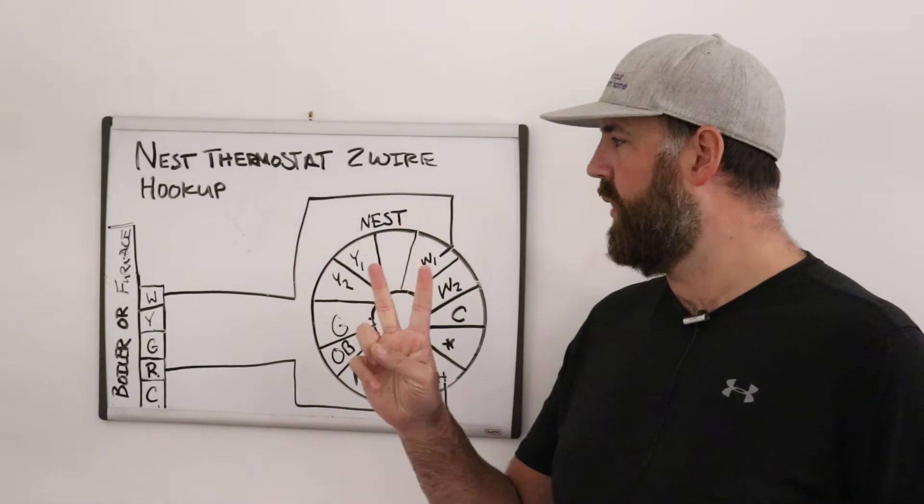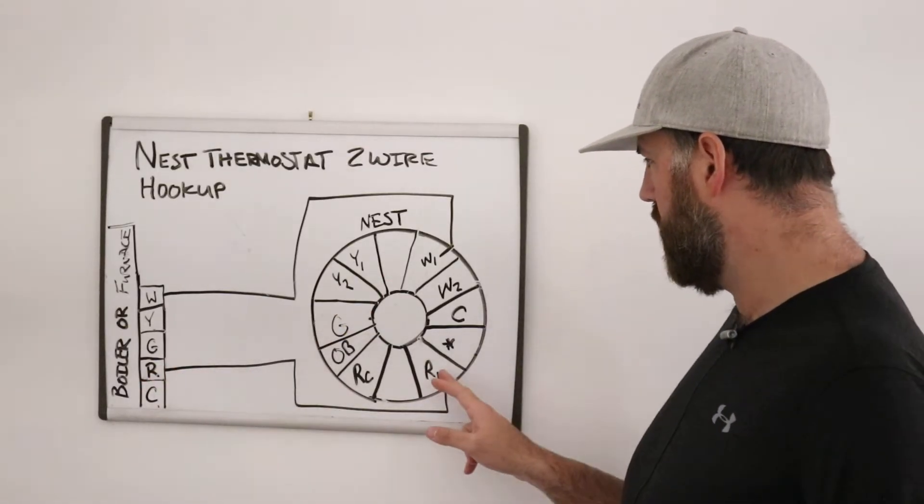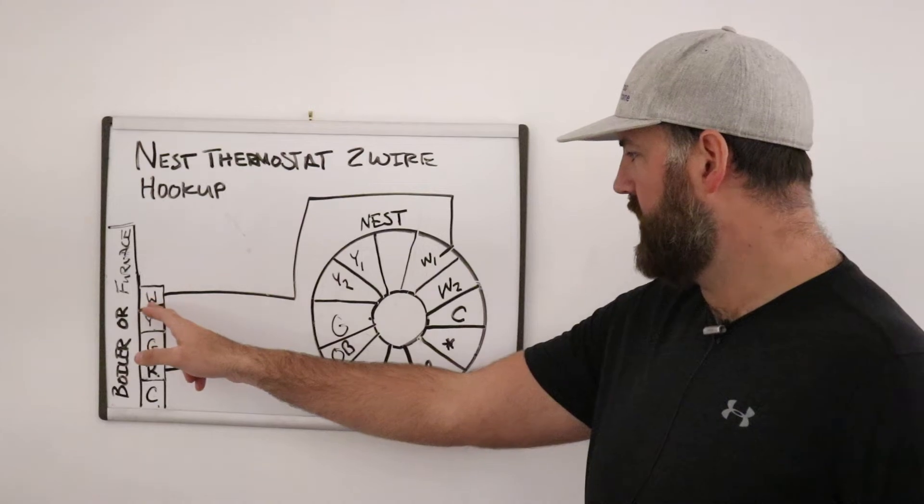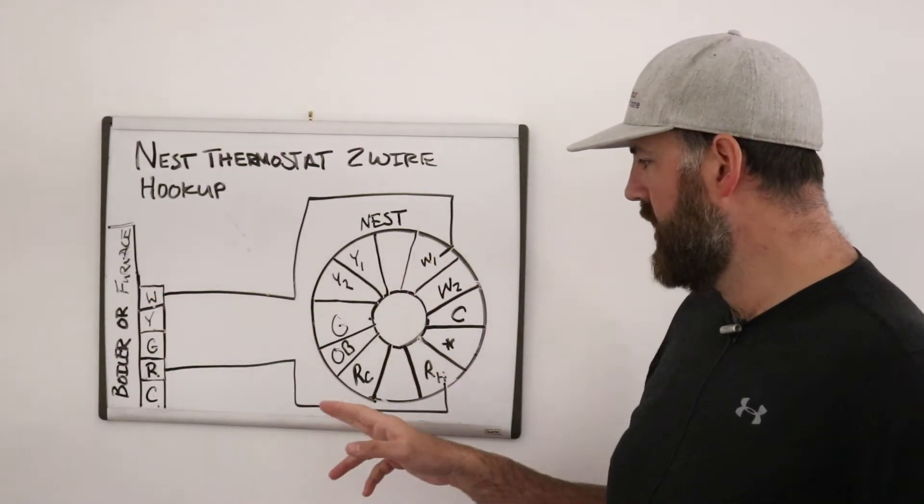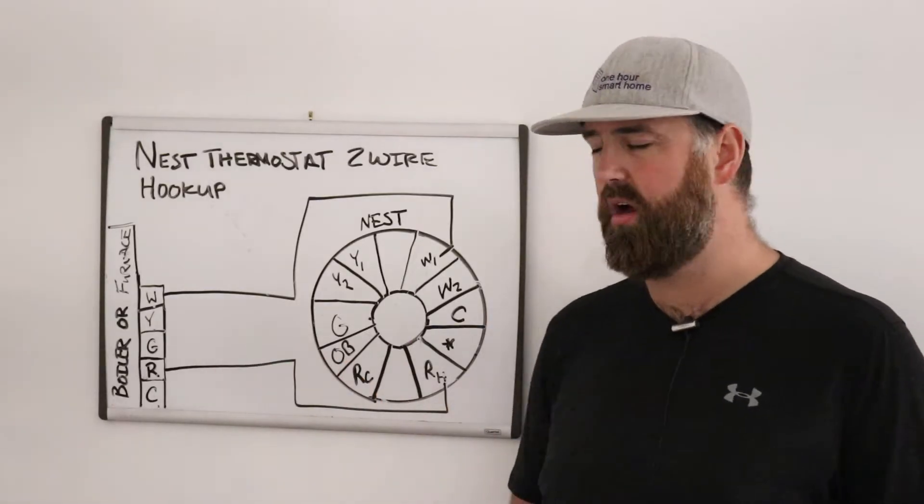And if you've only got two wires, this is the wiring diagram. You'd connect R to RH and W to W1. And typically these wires are going to be red and white. Not always though.